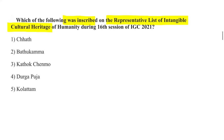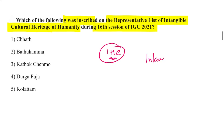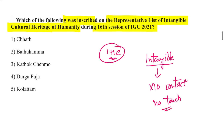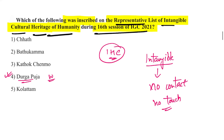Durga Puja of Kolkata was inscribed on the Representative List of Intangible Cultural Heritage of Humanity during the 16th session of the Intergovernmental Committee of UNESCO's 2003 Convention on Safeguarding of the Intangible Cultural Heritage. Intangible heritage refers to things that cannot be touched. This session was held in Paris, France, where UNESCO's headquarters is also located.